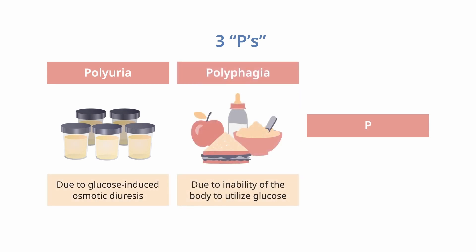Polyphagia is your second P. This is usually due to an inability of the body to use glucose. So the body feels like it needs more fuel. It really stimulates that hunger reflex and so patients keep eating.